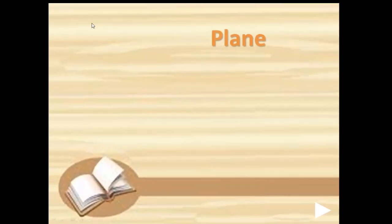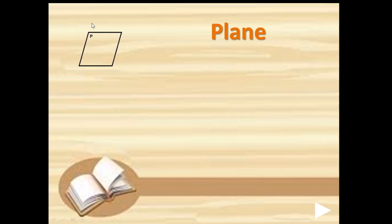Now, what is a plane? You all can see a wall at home or the floor. When you see both these figures at your home, it is a flat surface. It extends in all directions — like east, west, north, south — in all directions, extended to any limit. So any such figure or thing which is a flat surface, extended in all four directions, is called a plane.